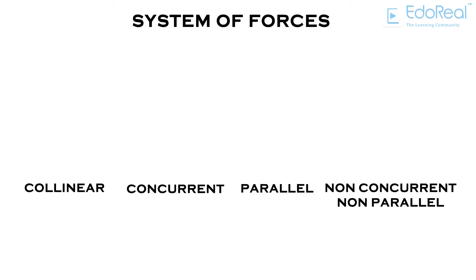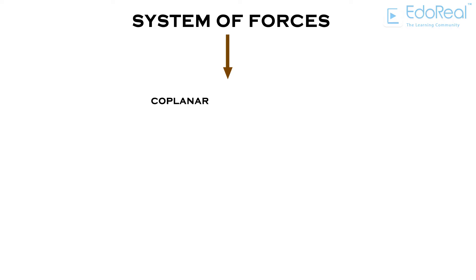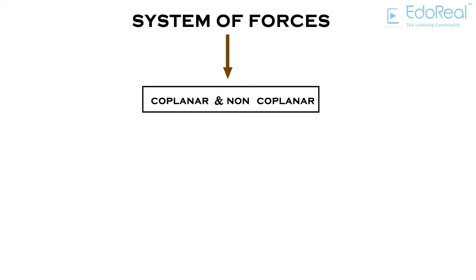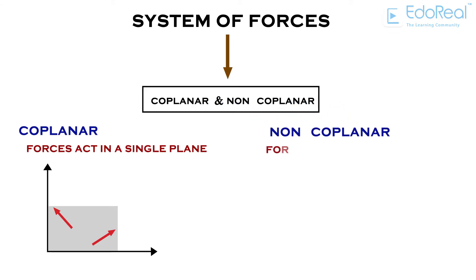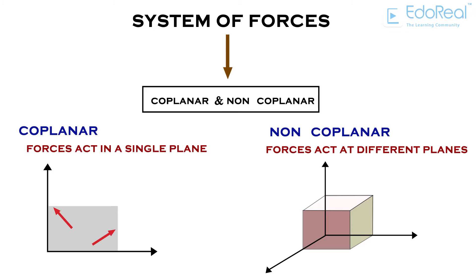A system of forces is basically categorized as coplanar and non-coplanar. Coplanar: if all the forces in a system act in a single plane, then it is said to be coplanar. Non-coplanar: if all the forces in a system act at different planes, then it is said to be non-coplanar.